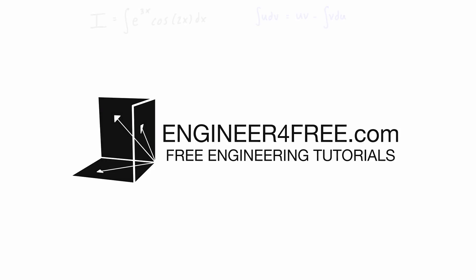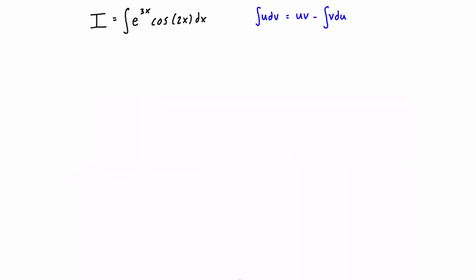Welcome back to another example where we're going to be using the integration by parts formula to solve an integral. In this case, we have the integral of e to the 3x times cos of 2x. This has a special format — whenever you see one in the form of e to the something-x times cos of something-x, you're going to have to apply the integration by parts formula twice.